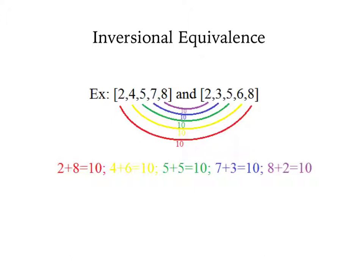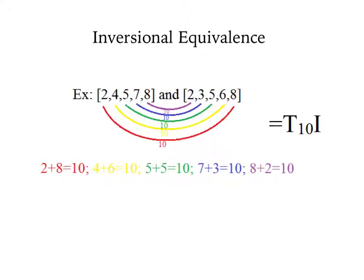Let's look at our first inverted example. Each addition of the pairs yields the number 10, informing us that these two sets are inversionally related and transposed by 10. We would notate this as T10I.